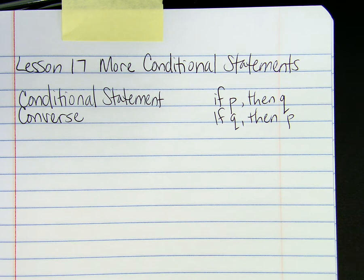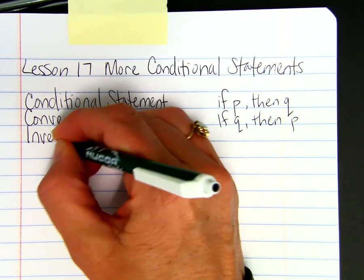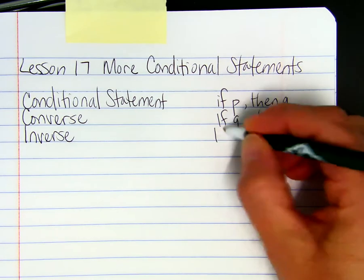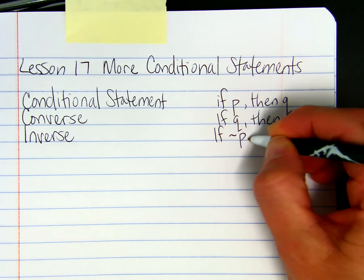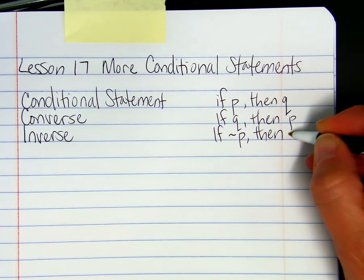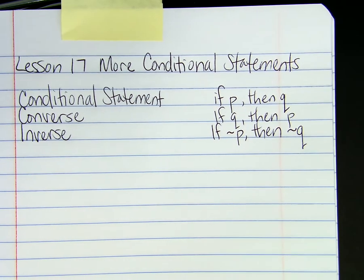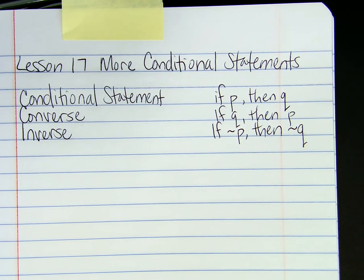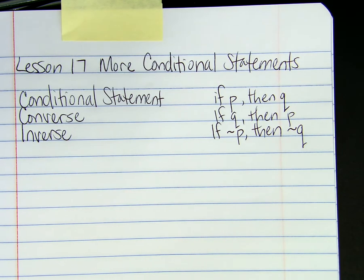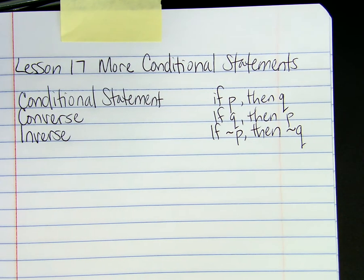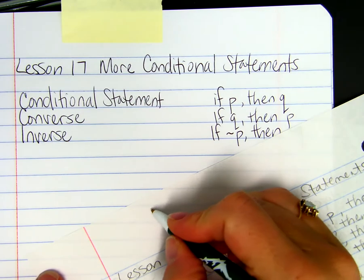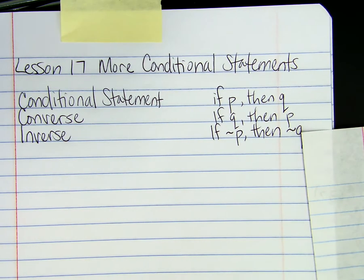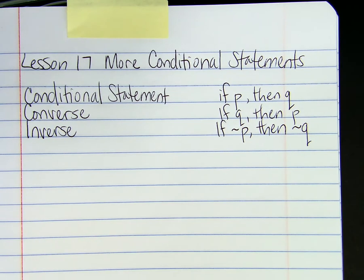Or you could say 'irregular,' which means the same thing. So the inverse statement of 'if P, then Q' is just 'if not P, then not Q.' We use this little squiggly line for 'not.' The word 'not' can be written multiple ways — in this book they use a squiggly line, in the next book they use a different symbol — but we'll just stick with the squiggly for now.